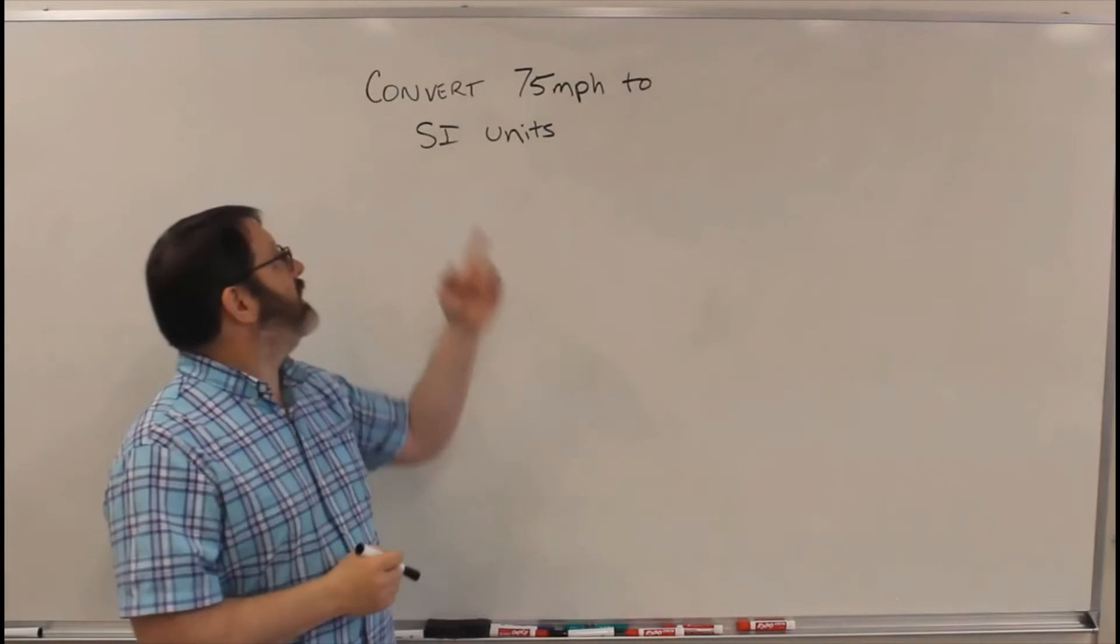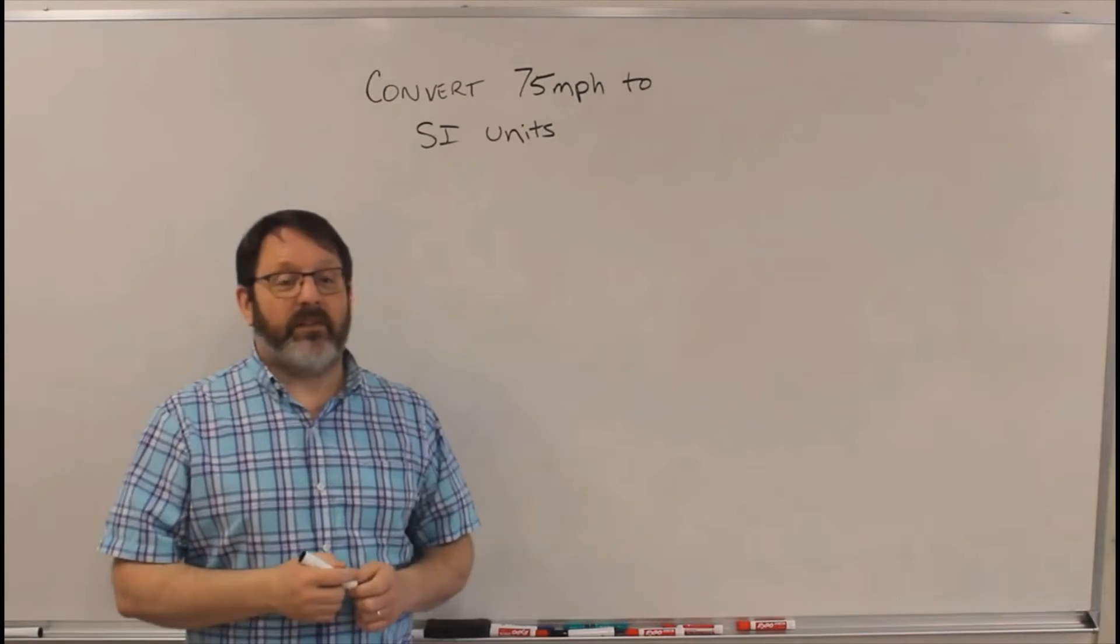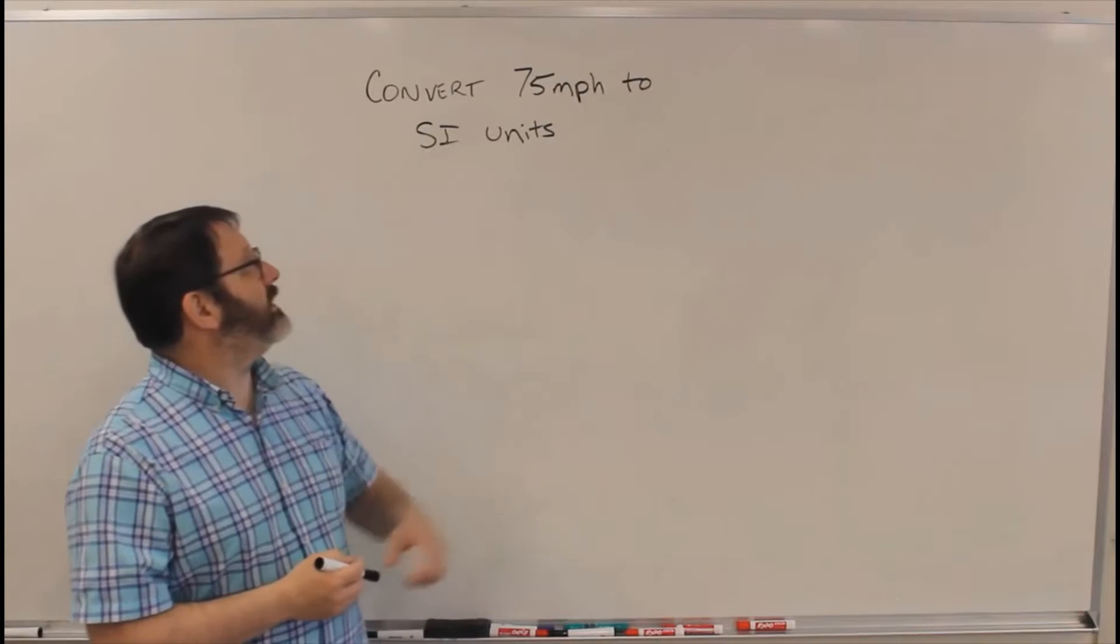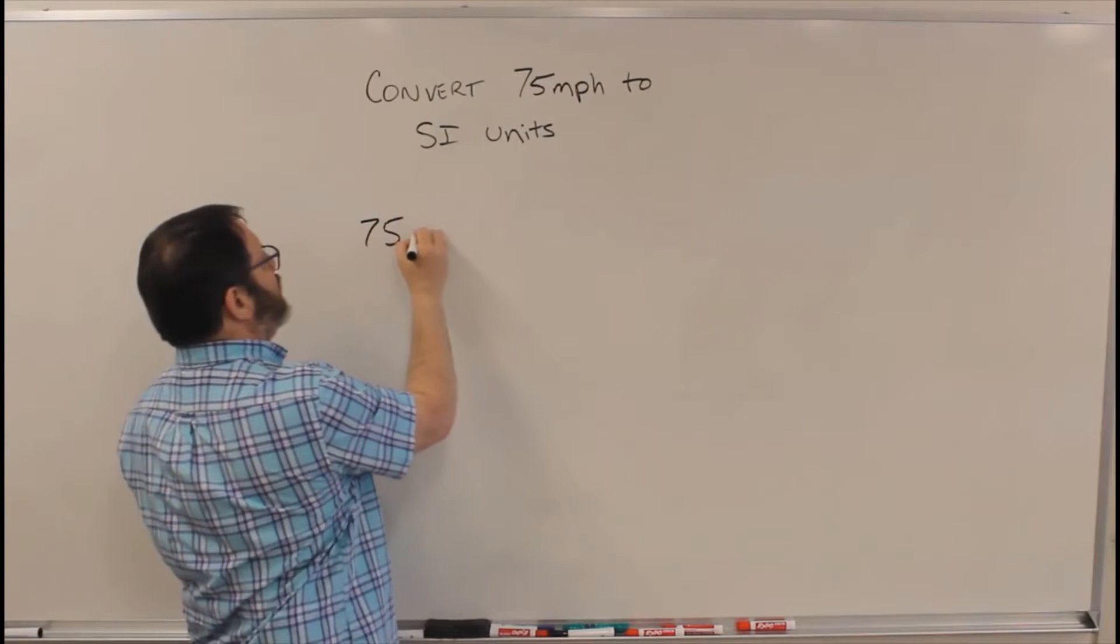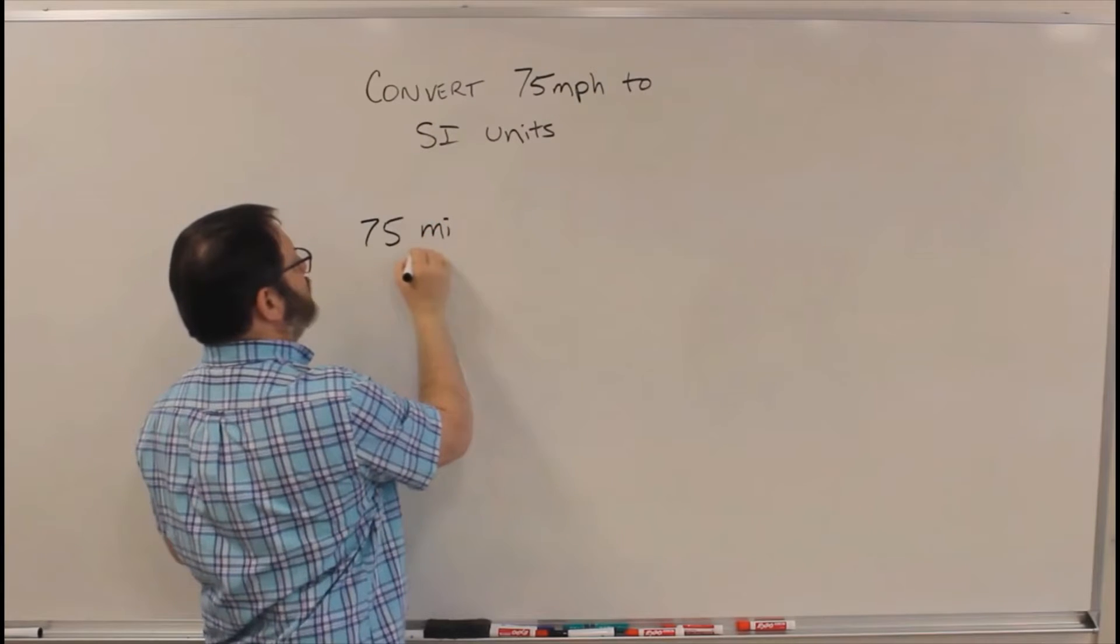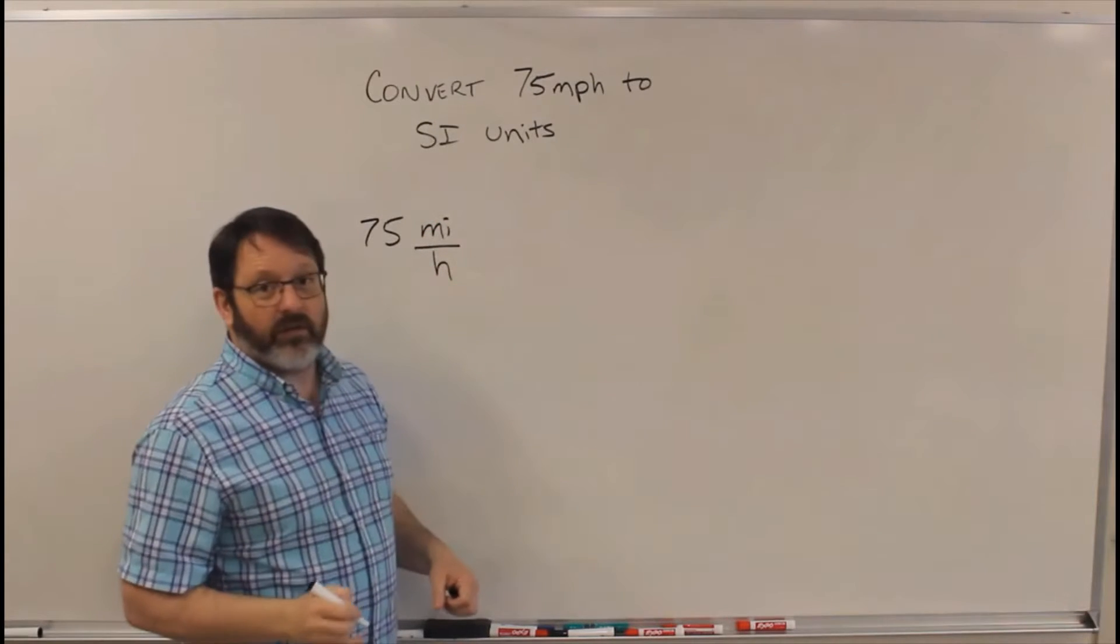So let's say we're given the question, convert 75 miles per hour to SI units. So 75 miles per hour, that's 75 miles over an hour.